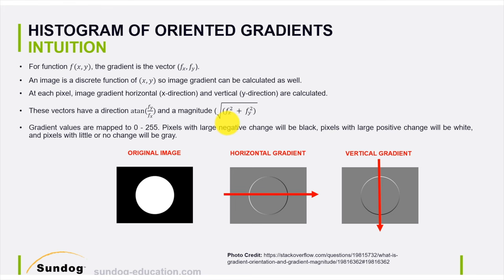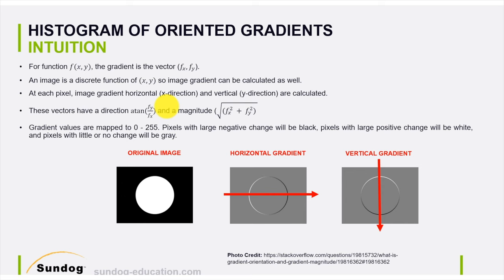I didn't want to jump directly to HOG features because first I want to cover the basics — what do we mean by gradient within an image? Let's take a look at a very simple example. Let's assume I have an original image that is all black with a white circle in the center, and I want to calculate the gradient in the x direction, which is called the horizontal gradient.